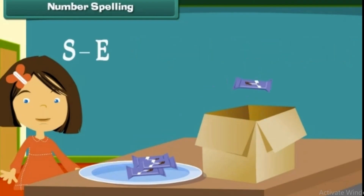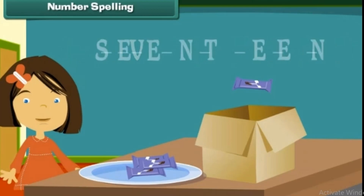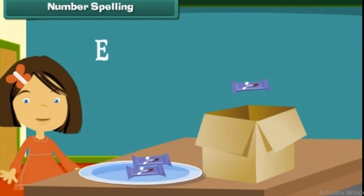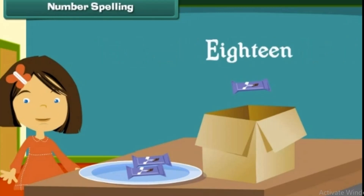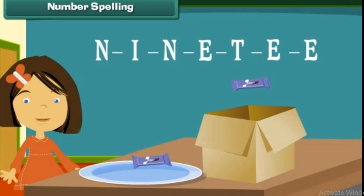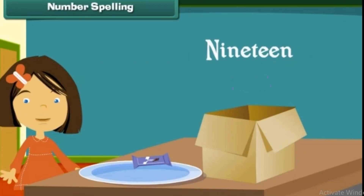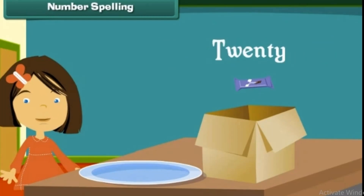S, I, X, T, E, E, N — sixteen. E, I, G, H, T, E, E, N — eighteen. N, I, N, E, T, E, E, N — nineteen. T, W, E, N, T, Y — twenty.